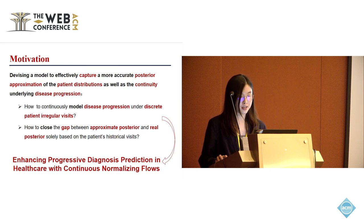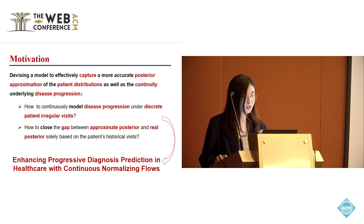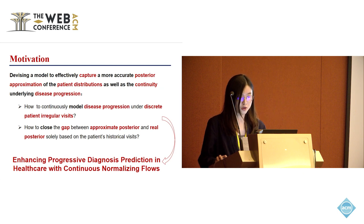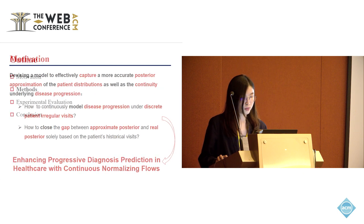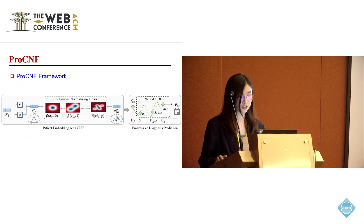However, there are two challenges: how to continuously model disease progression and discrete patient irregular visits, and how to close the gap between approximate posterior and true posterior solely based on the patient's historical visits. To address these challenges, we propose ProCNF — a novel framework aimed at enhancing progressive diagnosis prediction in healthcare with continuous normalizing flows.